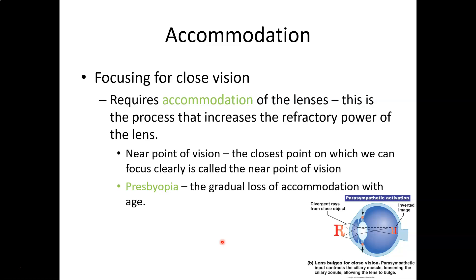Accommodation is the process your eyes go through to focus on things up close. Our eyes were built to see things 20 feet away or farther, so when we want to see closer things, we have to change the shape of the lens to focus light directly onto the fovea centralis. Because of technology, we now stare at things close to our faces for longer periods, and we're seeing more nearsightedness than ever before.